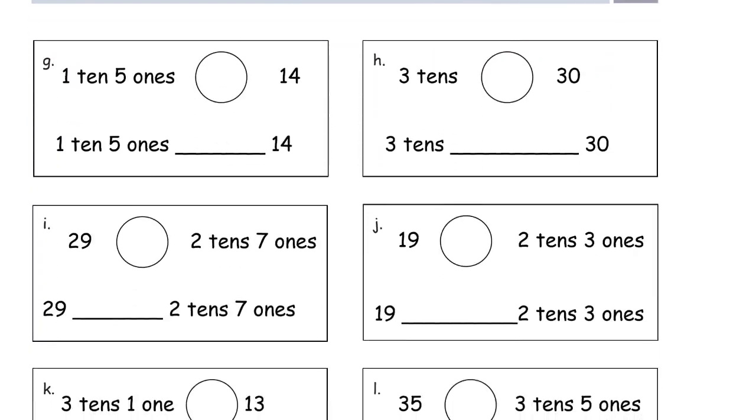Now we have some work in unit form. We have a number that's 1 ten 5 ones. If you're not sure what number that is, you can draw yourself a little place value box, tens and ones. 1 ten, 5 ones. Oh, that's 15.